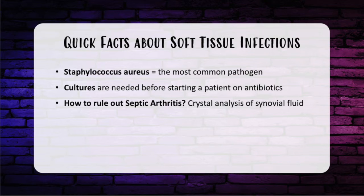With regards to any infection, get cultures before starting antibiotics. When getting cultures, if ruling out septic arthritis, it is important to send synovial fluid analysis for crystals in addition to cell count. This is to differentiate from gout and non-septic causes of arthritis.